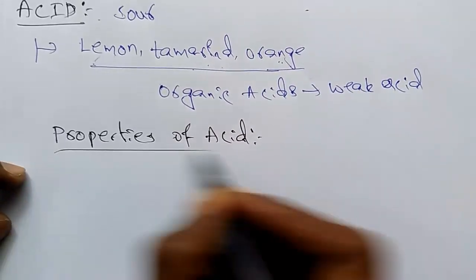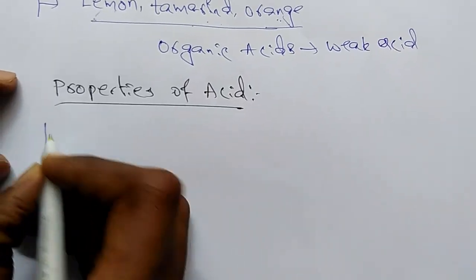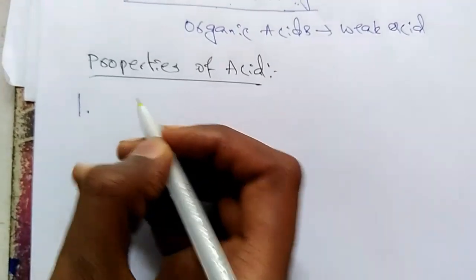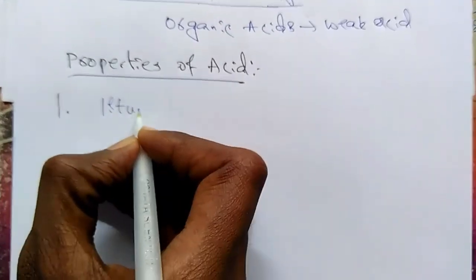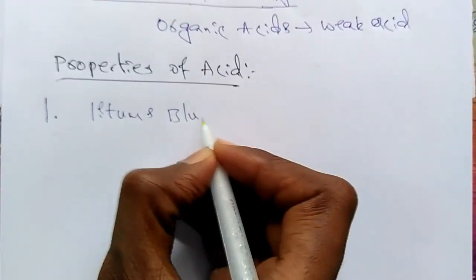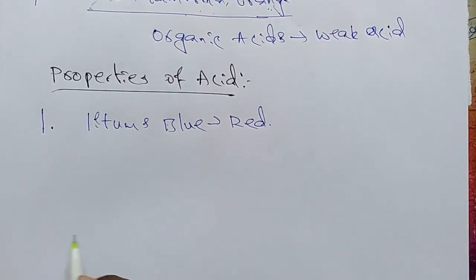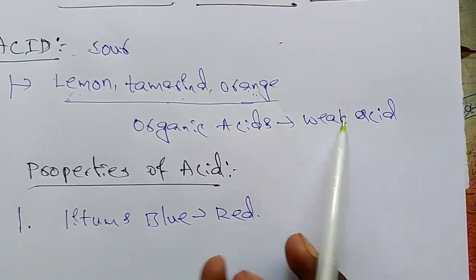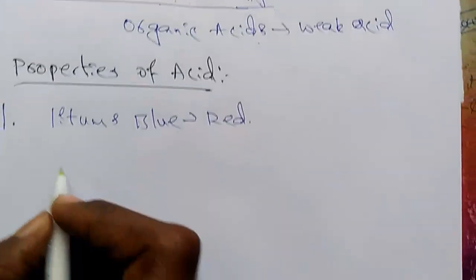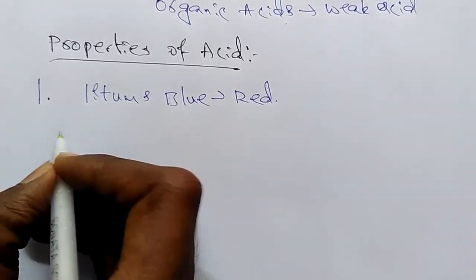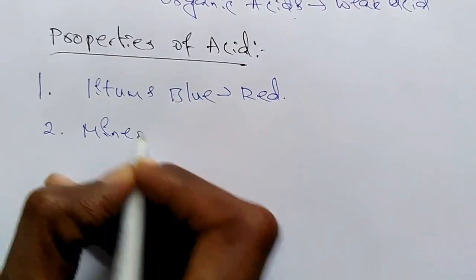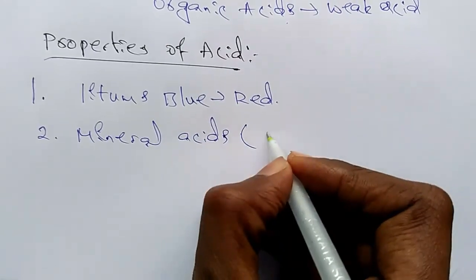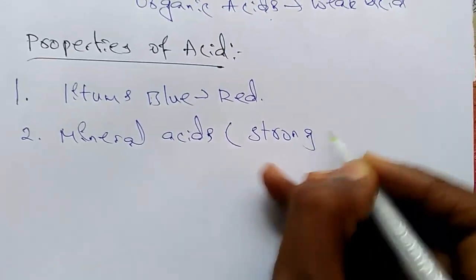The basic properties of acids: the first point is that it converts blue litmus into red litmus — litmus paper blue color converges to red color. Next point is that we have organic acids like lemon and tamarind, and we also have mineral acids.